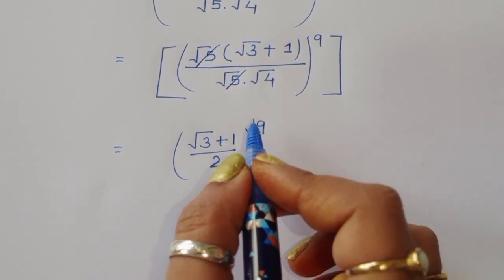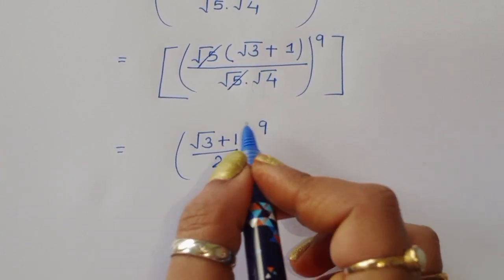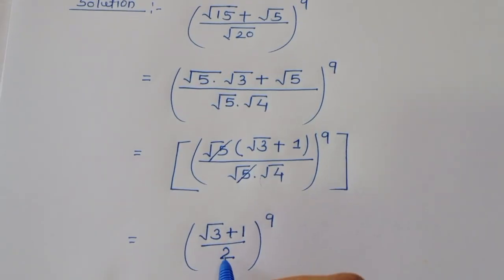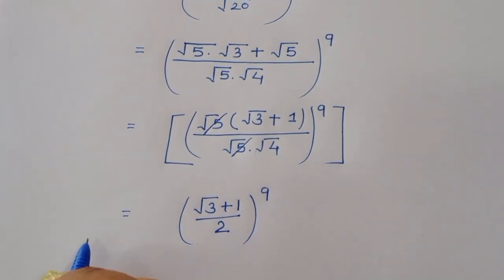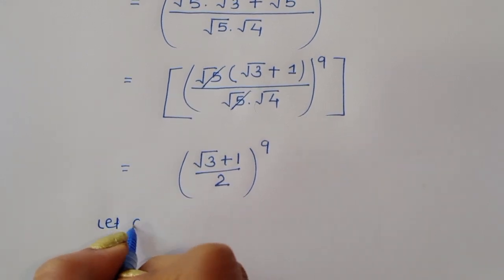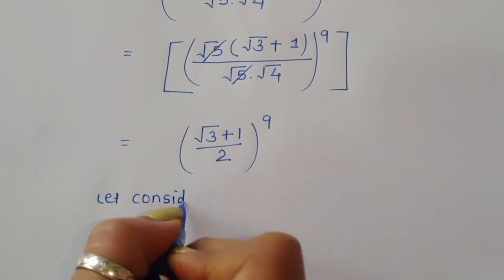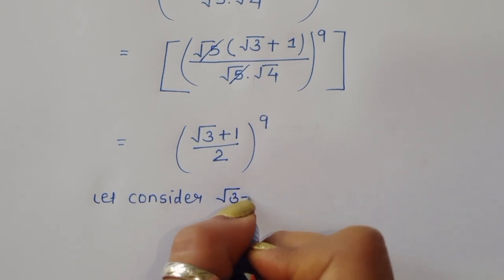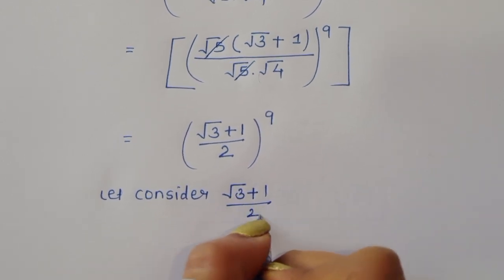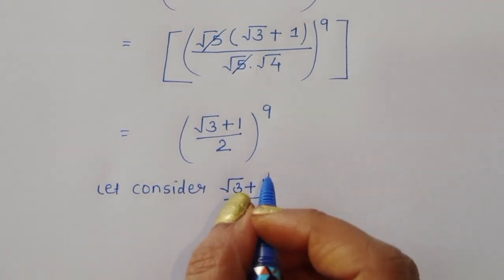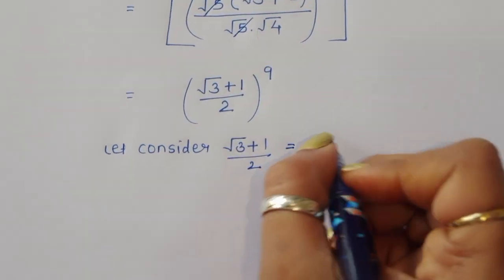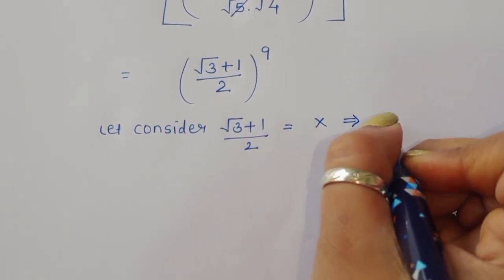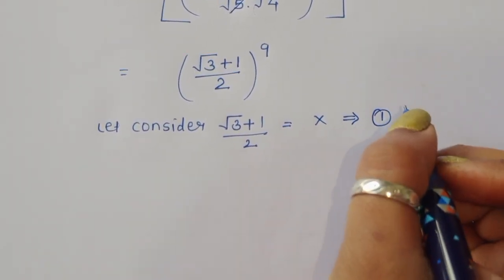To find the value of this expression, we consider and let x equal square root of 3 plus 1 divided by 2. This is equation number 1.